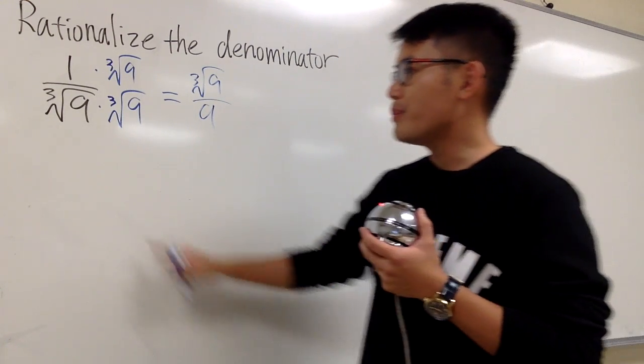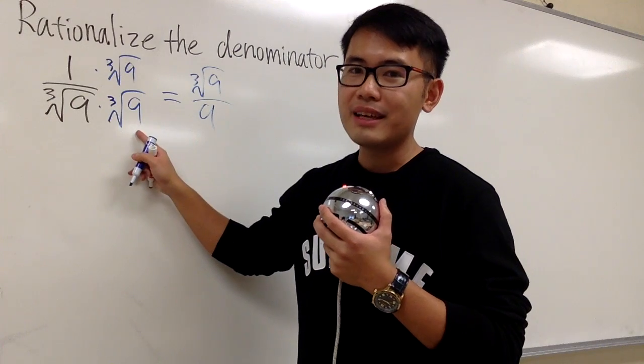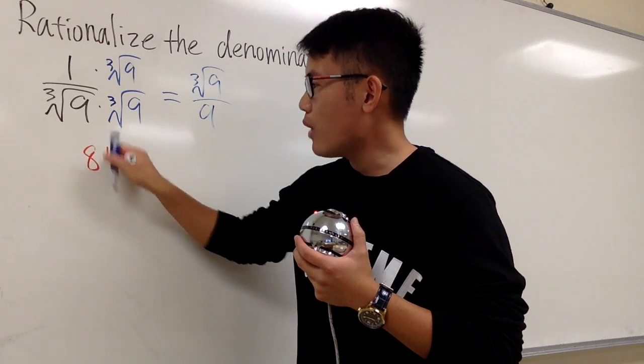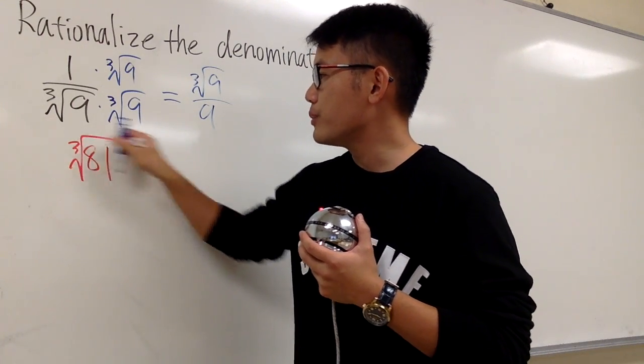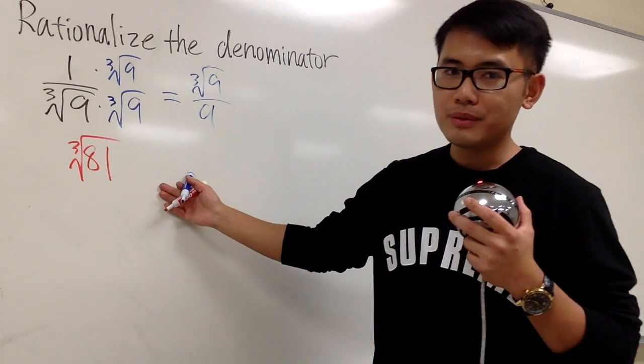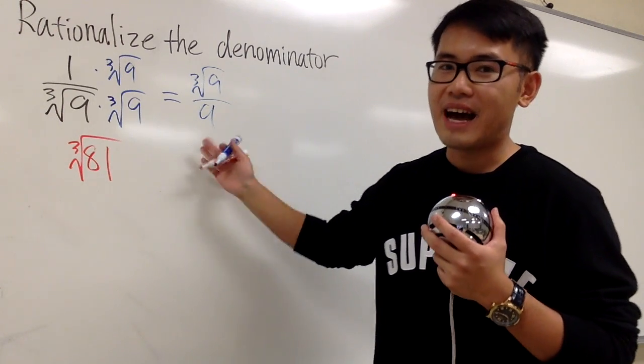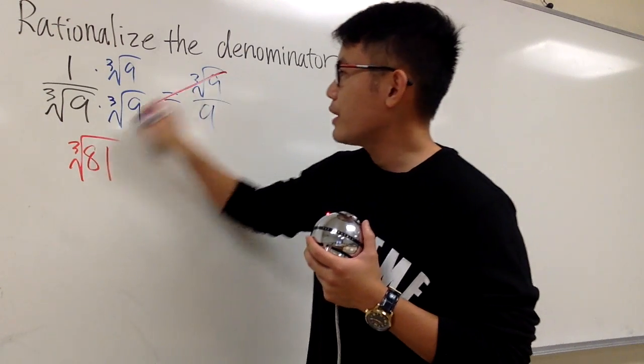This is wrong! Well, because you see, 9 times 9 is what? That's 81 inside of a cube root. What's this? This is definitely not 9. So this right here is wrong.